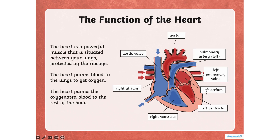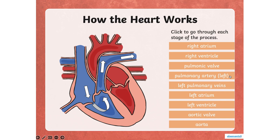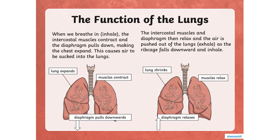Key terms: aorta, pulmonary artery, left pulmonary veins, left atrium, left ventricle, right ventricle, right atrium, aortic valve. How the heart works — let's go through each stage: right atrium, right ventricle, pulmonic valve, pulmonary artery, left pulmonary veins, left atrium, left ventricle, aortic valve.